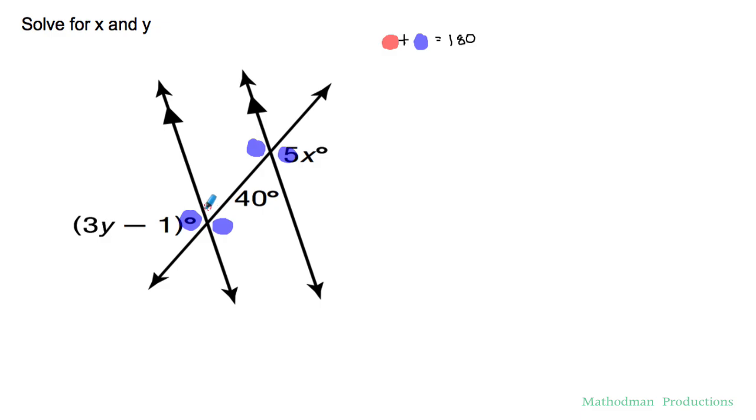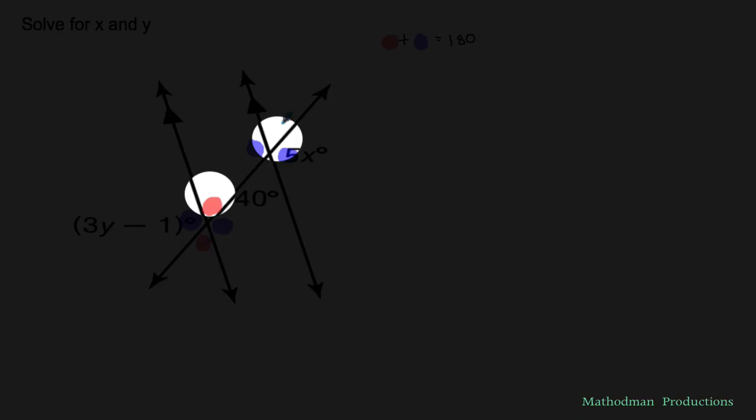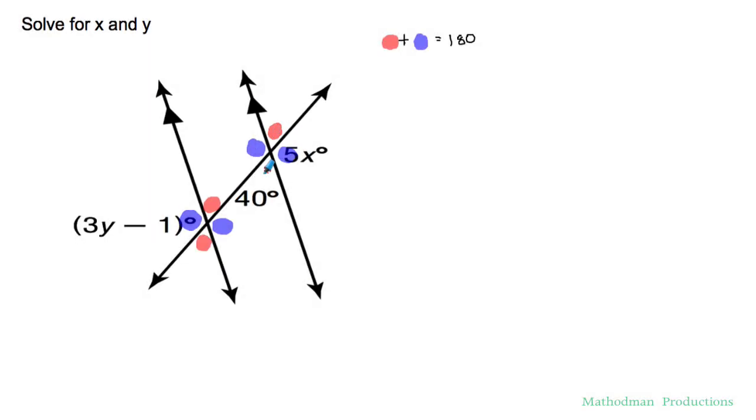Now let's color things in red. This one's red, this one's vertical so that's red. This is corresponding to this one so that would be red and this is vertical so that would be red. Again everything that's the same color are the same angle measurement. Anything that's red and blue added together will equal 180. Why is that? It's because red and blue they make a straight line.